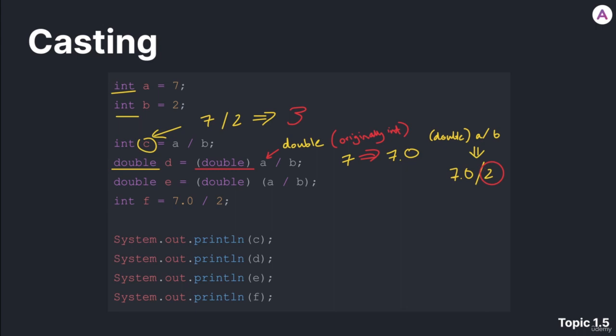So 7.0 divided by 2, even though this 2 is an integer, the answer would be 3.5.